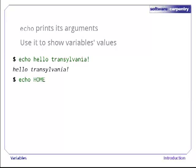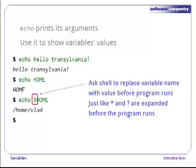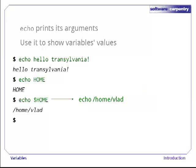Now let's try to show the value of the variable HOME with 'echo home'. Whoops, that just prints 'home'. Let's try this instead: 'echo $HOME'. The dollar sign tells the shell to replace the variable's name with its value. This works just like wildcards — the shell does the expansion before running the program we've asked for. Thanks to this expansion, what we actually run is 'echo /home/vlad', which shows us the variable's value.